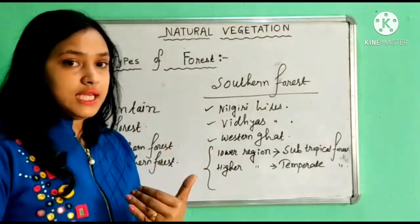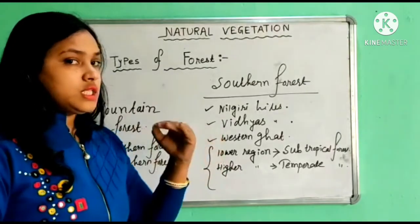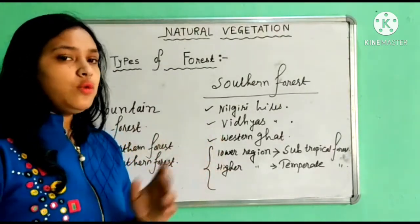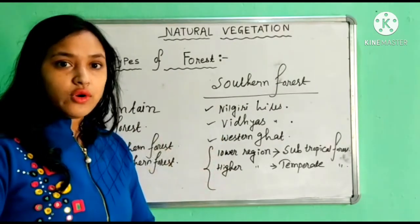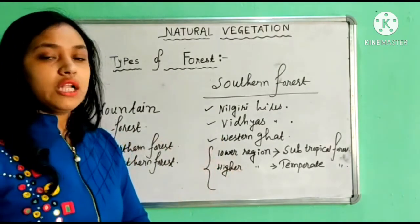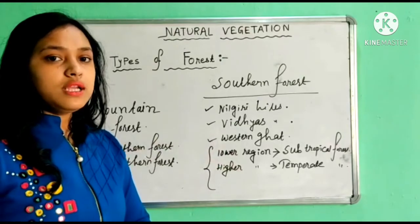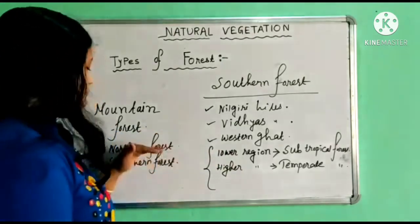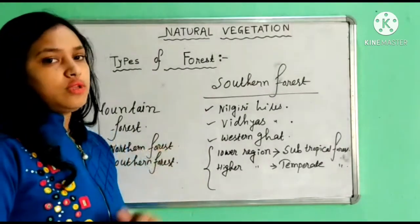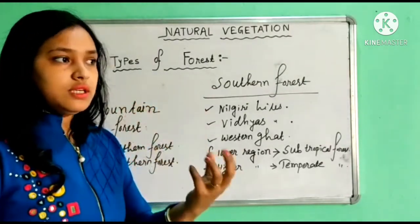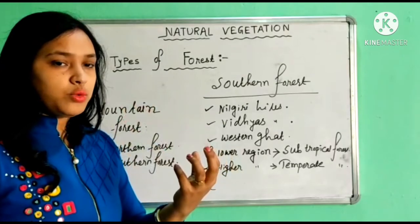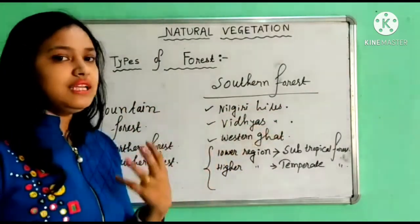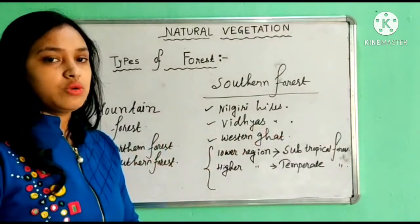So, these are the four types of forests found in India: first is tropical evergreen or semi-evergreen forest; second is tropical deciduous forest; third is tropical thorn forest; and fourth is mountainous forest. In mountainous forest we have northern forest, which includes the Himalayan region, and southern forest, which includes Nilgiri Hills, Vindhya Hills, and Western Ghats in peninsular India.